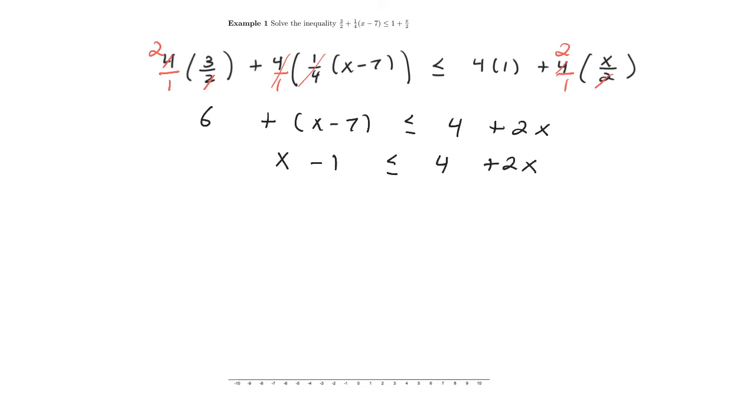Now I'm going to take the step where I'll add 1 to both sides. And at the same time, I'm going to subtract 2x. If I do this, on the left, I get negative x. And on the right, I get 5.